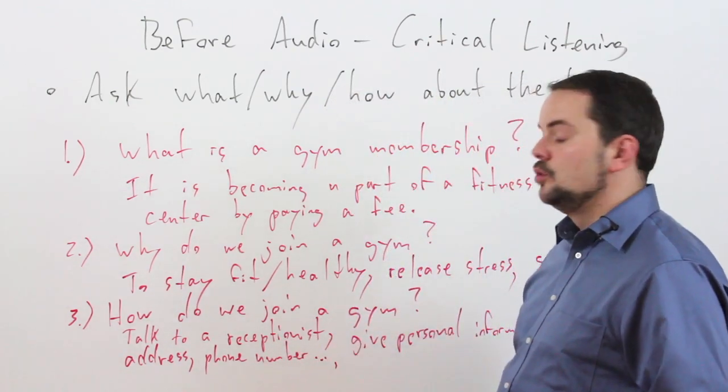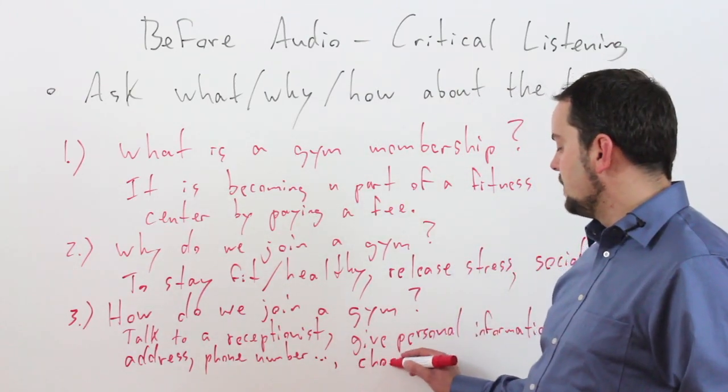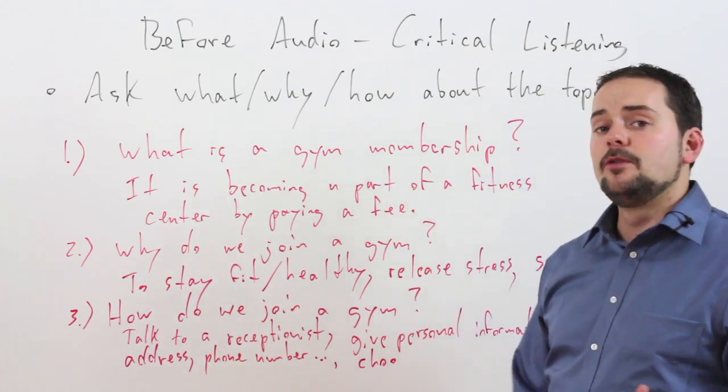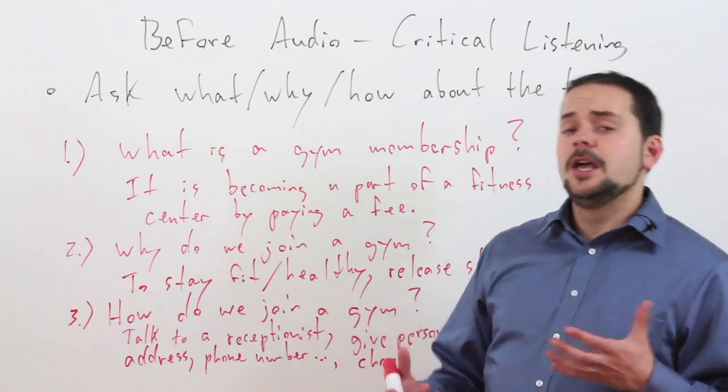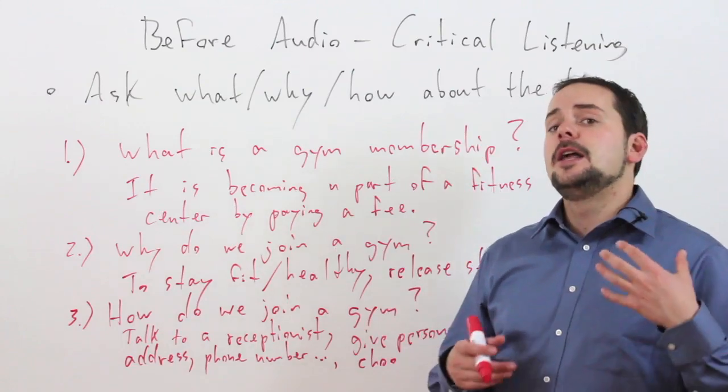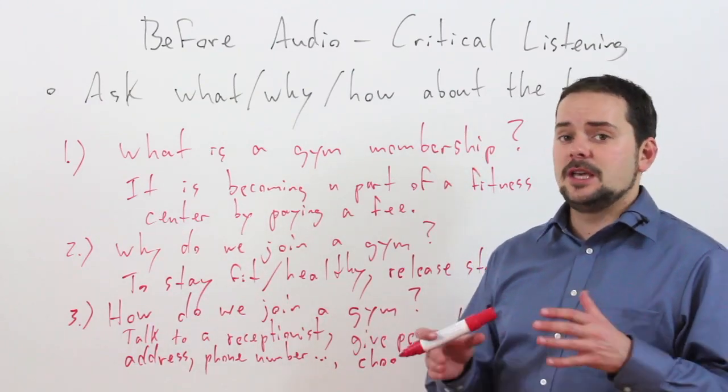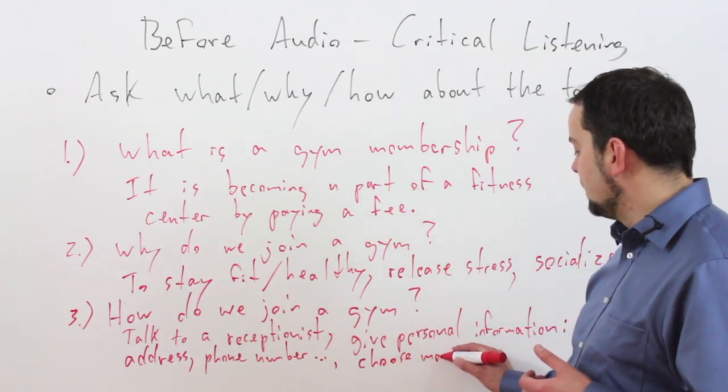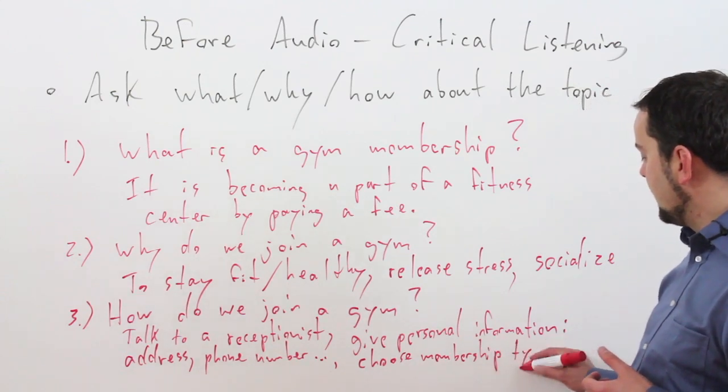And then we choose some kind of plan. So we might choose to work out for one month in the beginning, or half a year, or a full year. Usually, the longer membership you buy, the cheaper it is. And again, all of this kind of information starts to come to our mind. And you'll see that it's very important. And you'll hear a lot of this in this example. So choose membership type and pay.